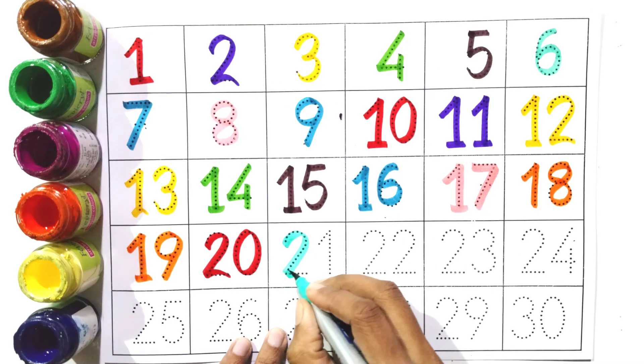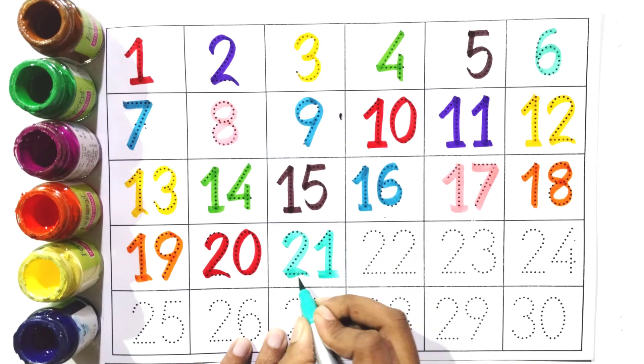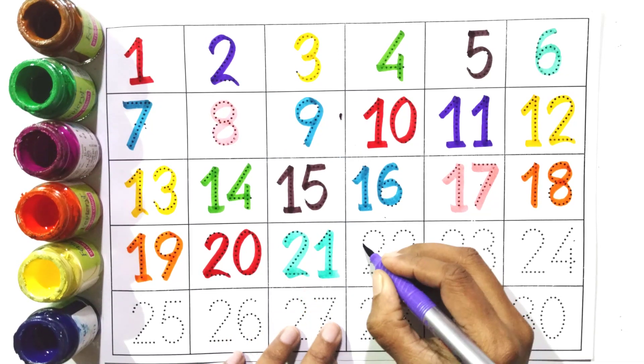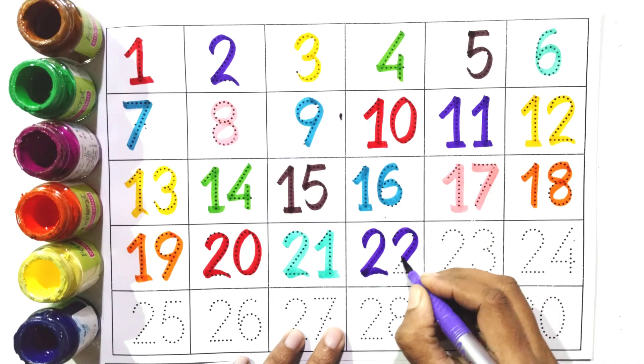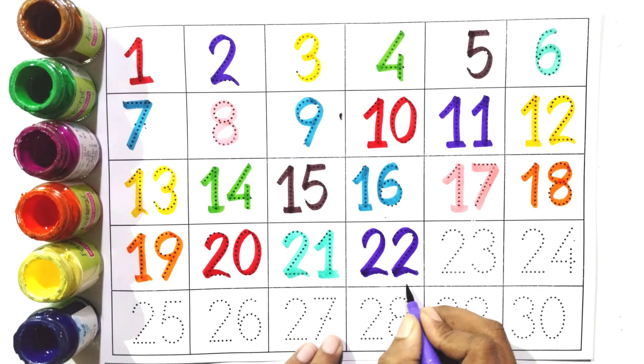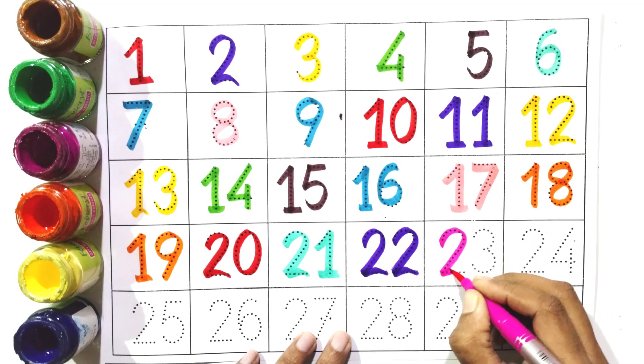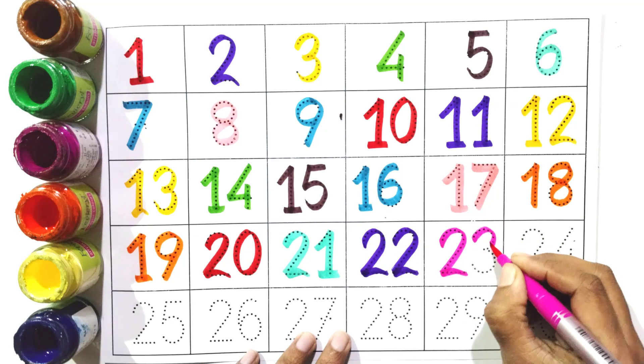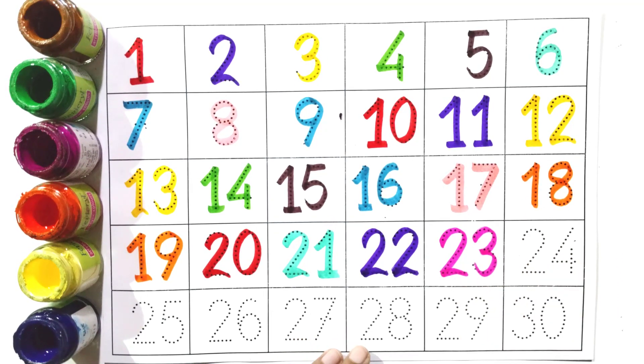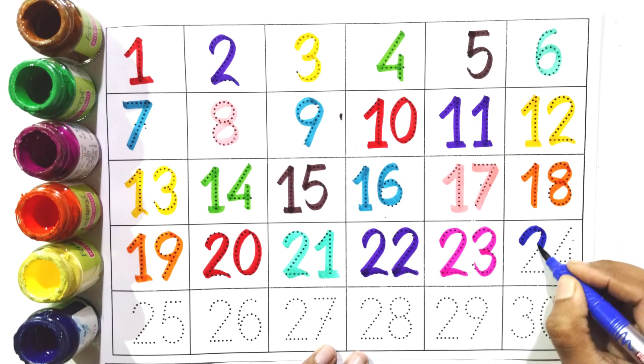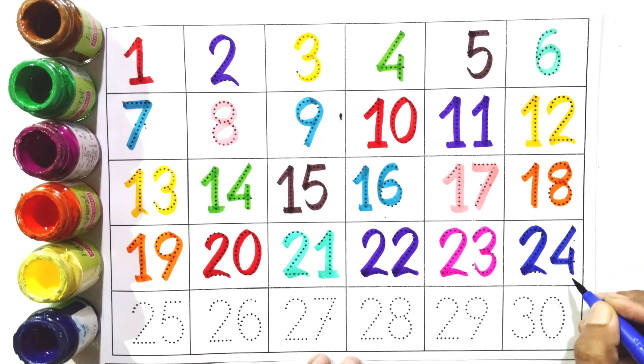Two and two, twenty-two. Two and three, twenty-three. Two and four, twenty-four.